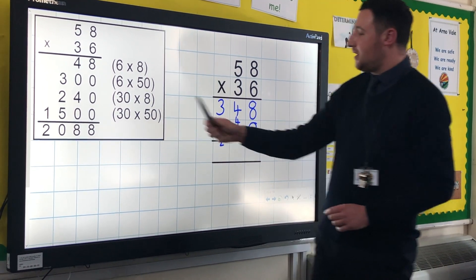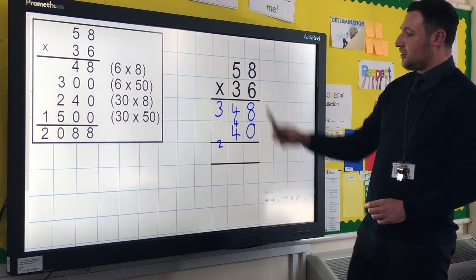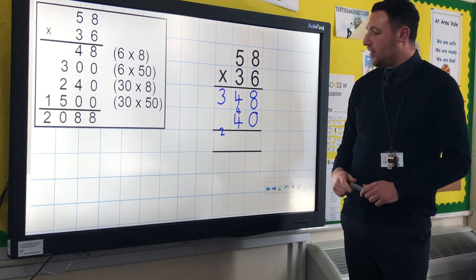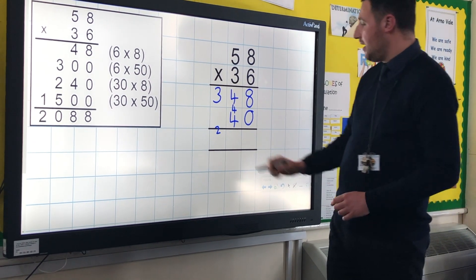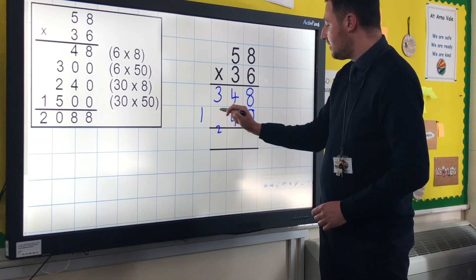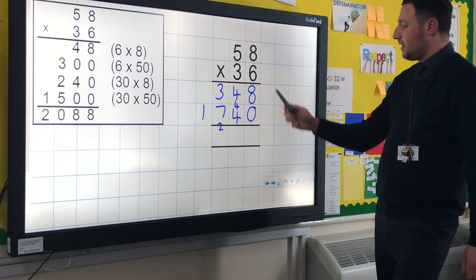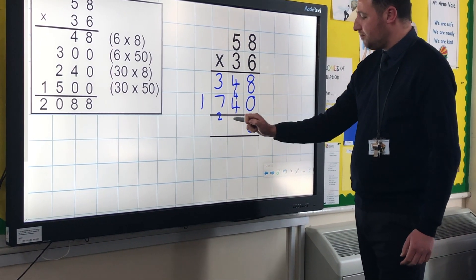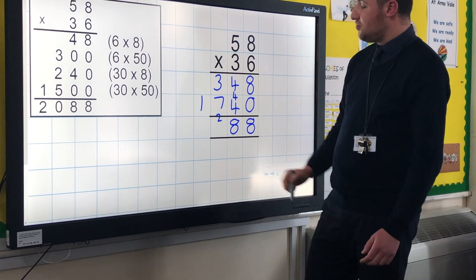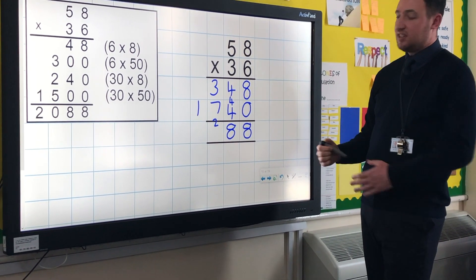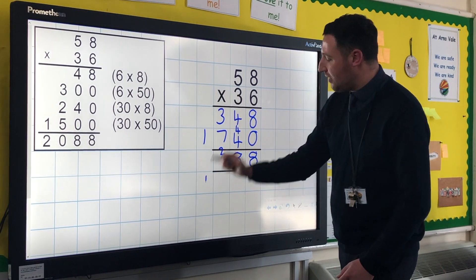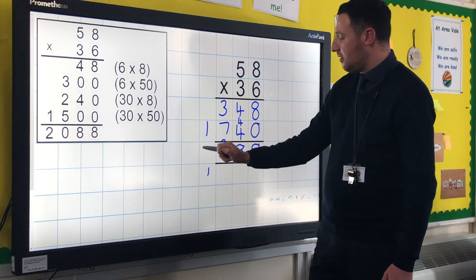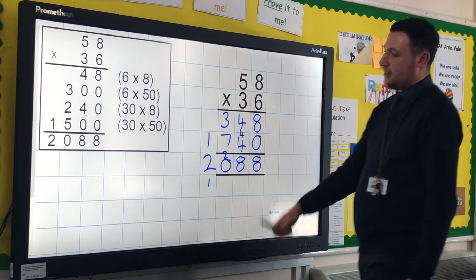We then do the final calculation which is 30 lots of 50. 30 lots of 50 is 1500, add on that 200 that we've carried over previously and that would give us 1700. We can then add the units, we can add the tens, we can add the hundreds, and that 700 and 300 gives us a thousand, so we'd have to carry that thousand over. Then we can add the thousands together, so we've got the same answer: 2088.